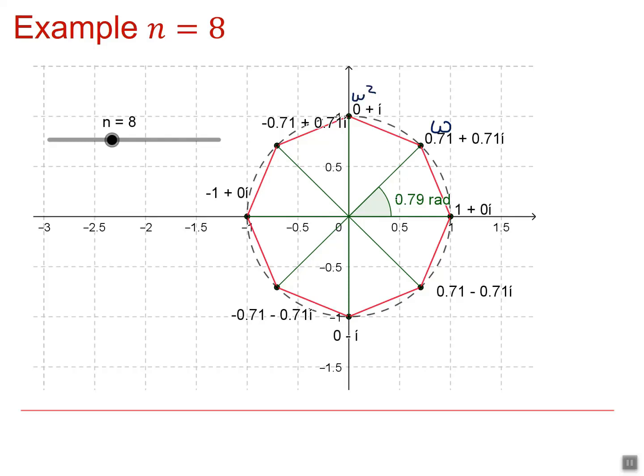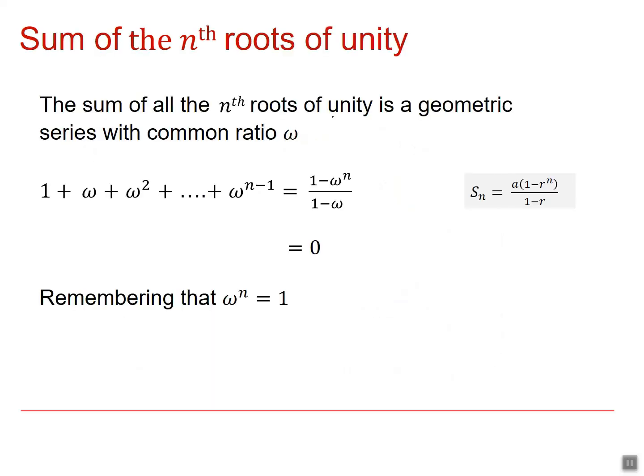So this would be omega squared. Remember, multiplication is multiply the moduli and add the arguments. So it's still going to be on the unit circle and it will be two sections around. So this will be omega cubed, omega to the 4, omega to the 5, omega to the 6, omega to the 7. And of course, we always get 1. You can think of that as omega to the 0 if you prefer.